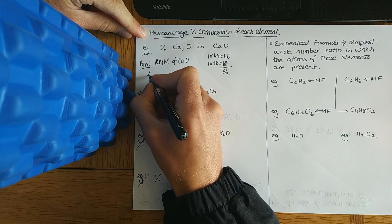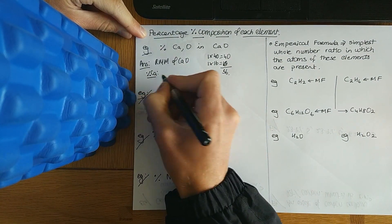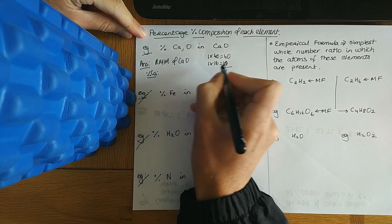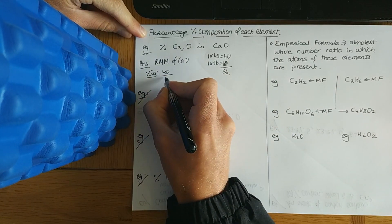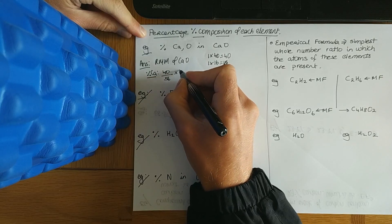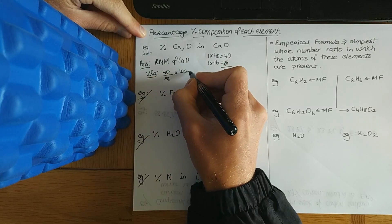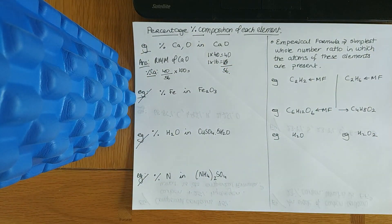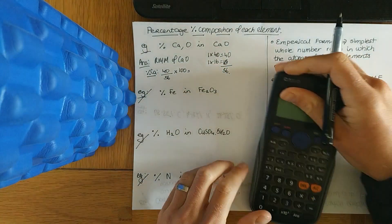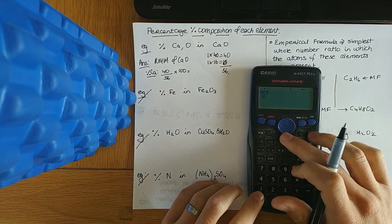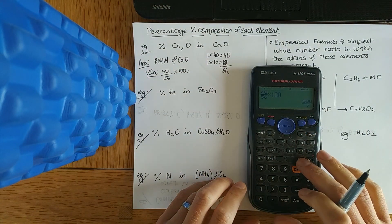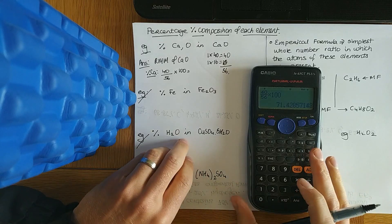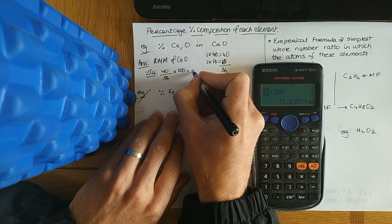Therefore, to work out the percentage of calcium, it's the mass of calcium — 40 — over the 56, the total relative molecular mass, and to make anything a percentage, times by 100. Throw that in your calculator and it's 71.43%.